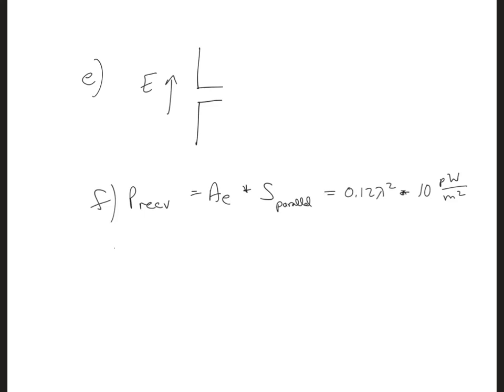And since we're given a frequency of operation, we can calculate the wavelength as C over F, which is going to be 0.125 meters. So plugging all this in, we can get P received is 0.12 times 0.125 squared times 10. And the units will work out to be picowatts, because the meters squared over meters squared cancel. And this turns out to be 0.019 picowatts.